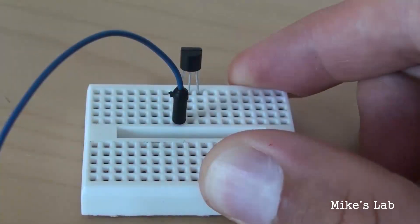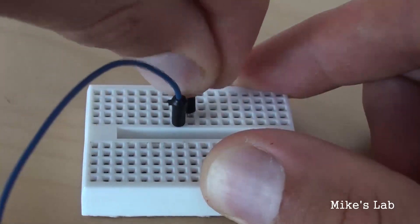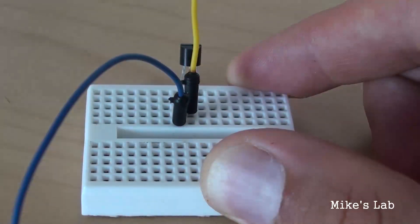The most left pin goes to ground. The middle pin goes to analog in on your Arduino, and the right pin goes to 5V.